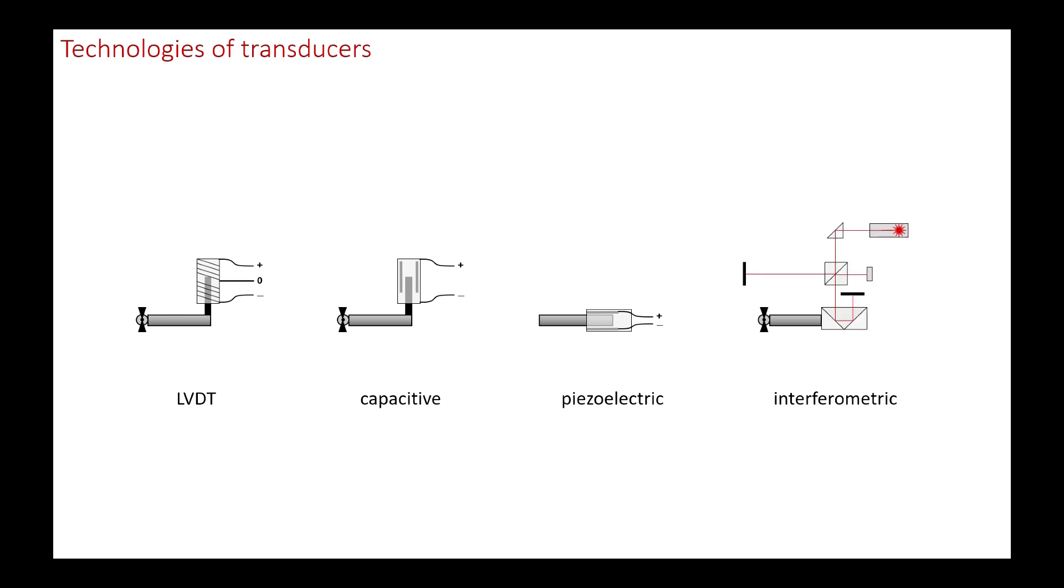Finally, for high-end and high-precision profilometers, the height variation is evaluated by a laser interferometer. This allows for large vertical excursions while maintaining extreme resolution.